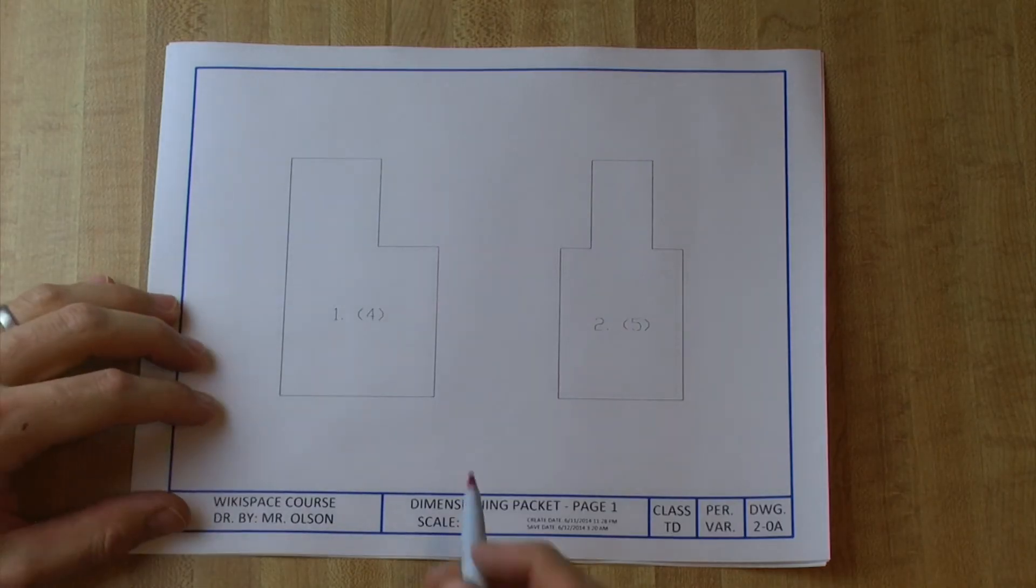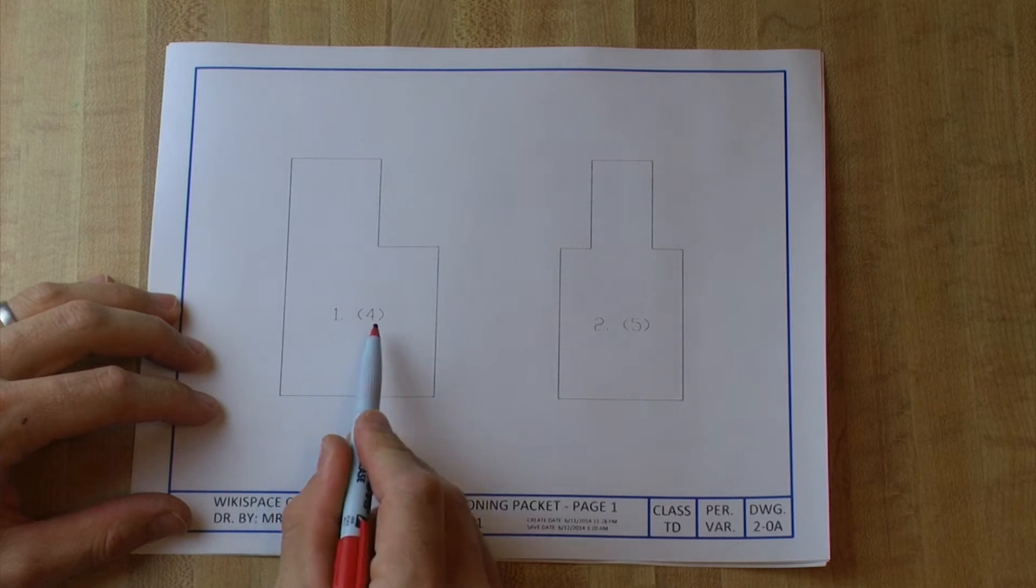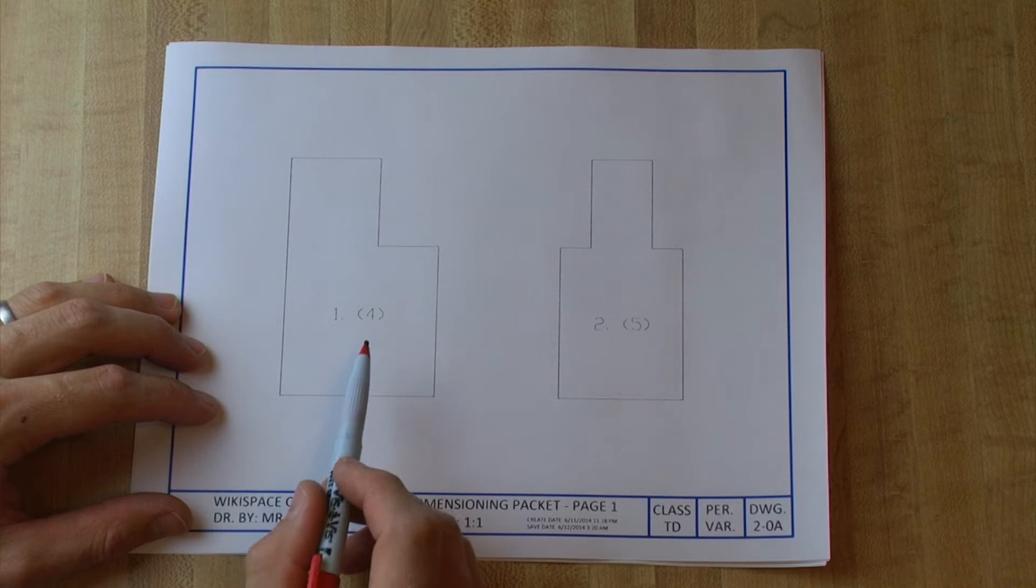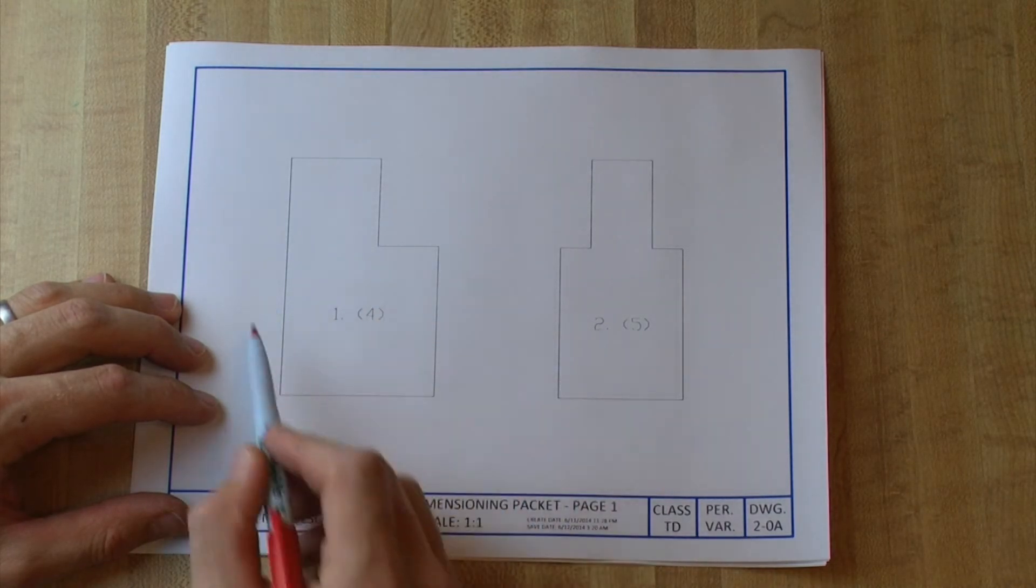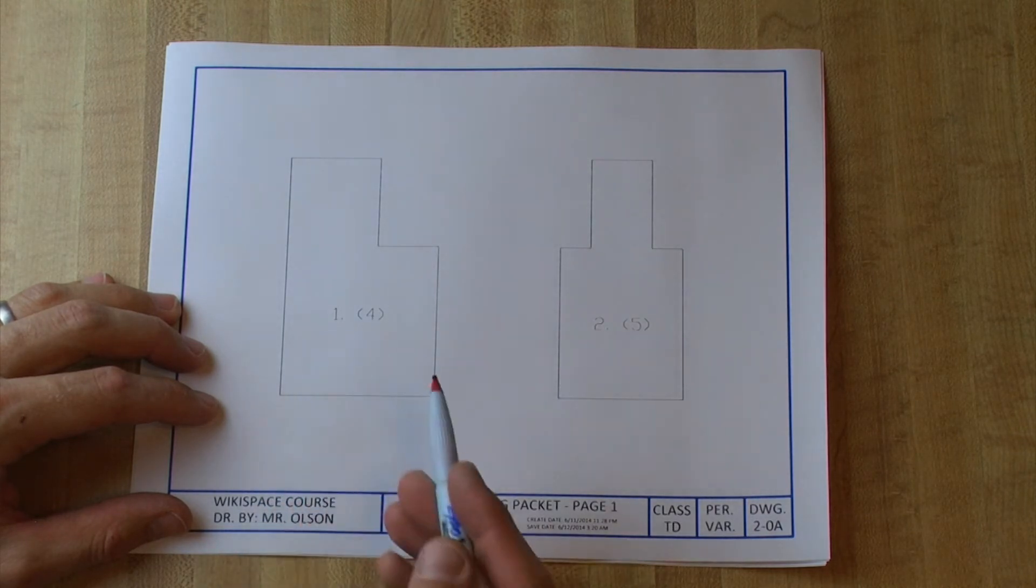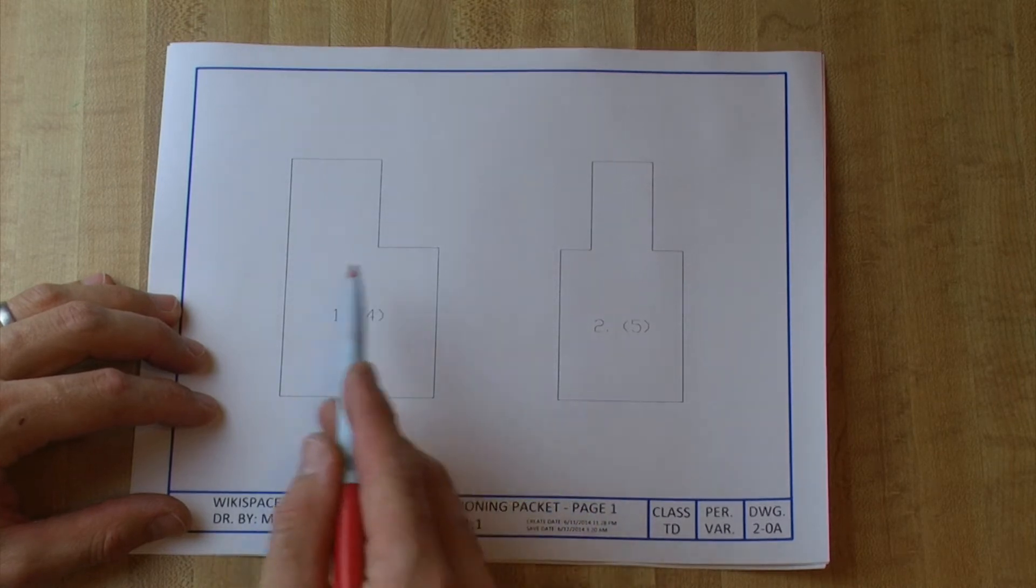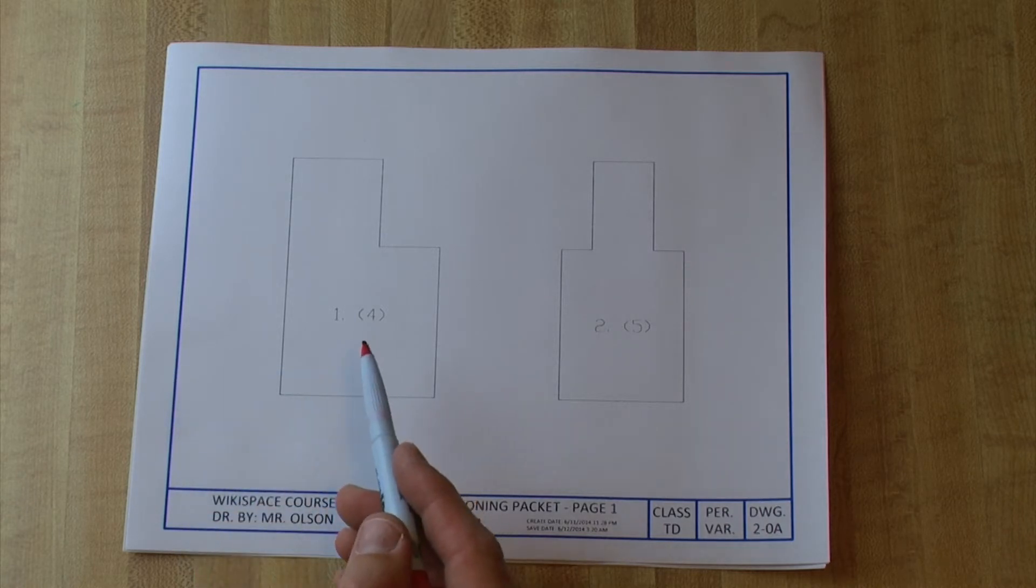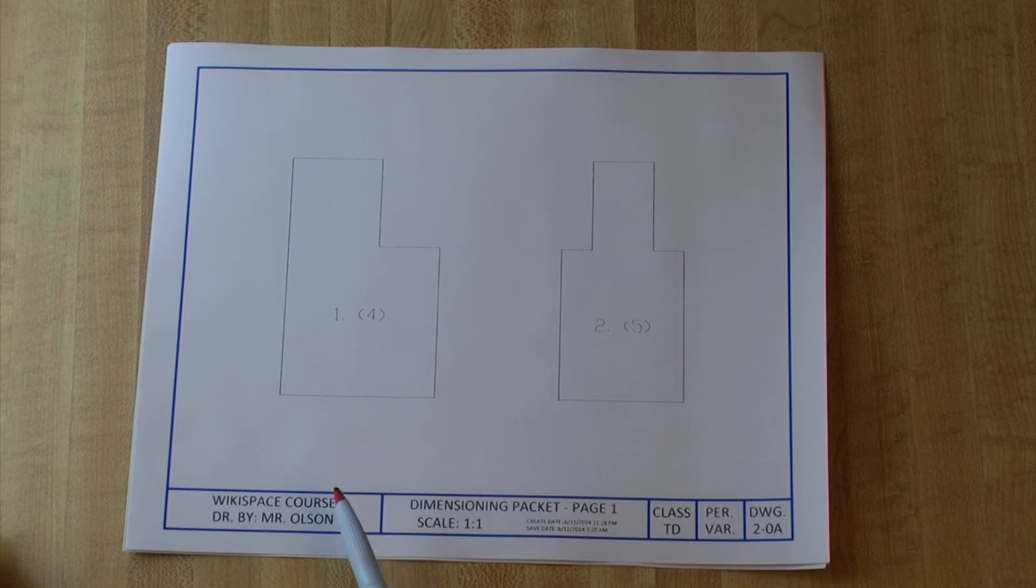So if we take a look at the first problem you'll see in brackets we have a number four. That means that there are four dimensions that need to go on this object so that we can fully dimension it and be able to duplicate this object or have maybe a machinist be able to duplicate it in a manufacturing setting. We need those four dimensions to be able to draw the entire thing.